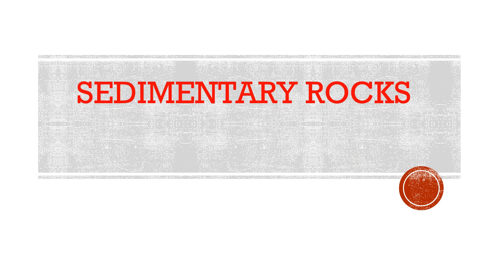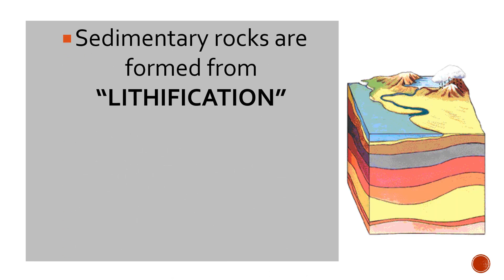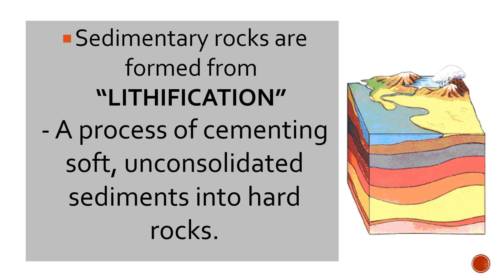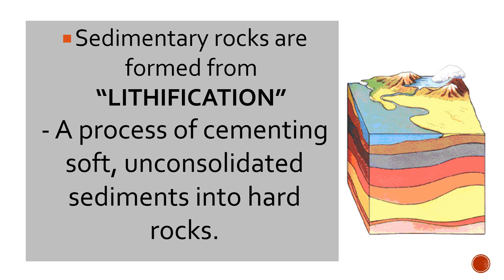Sedimentary rocks provide information about surface conditions that existed in the earth's past. They are formed from particles of sand, shells, pebbles, and other fragments called sediments that accumulate in layers and over a long period of time harden into rocks. This process is called lithification — cementing soft and consolidated sediments into hard rocks. Sedimentary rocks form at or near the earth's surface. The layers of rocks are called strata, and the process of arranging them in layers is called stratification.